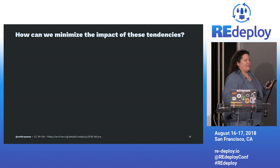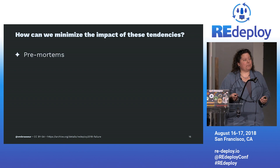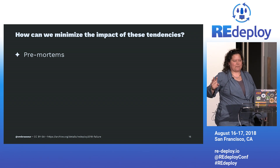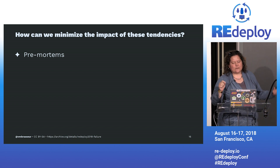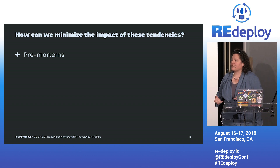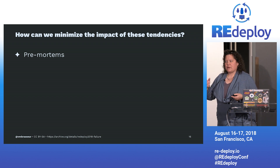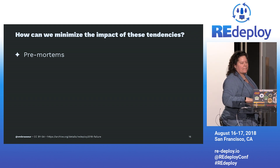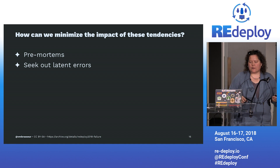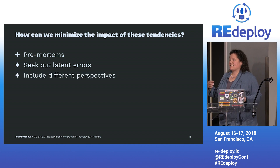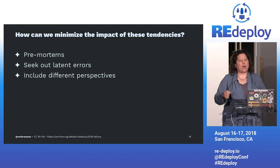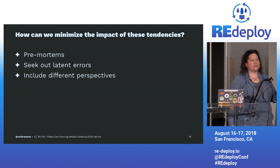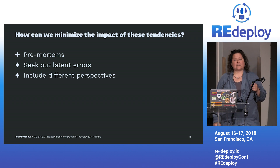How can we get better at these tendencies against complexity? We can do a premortem. When you're doing a premortem, among other things, you can look for latent errors, spot them, and do something about them before they happen — set up some sort of risk-minimizing mechanism. When you do a premortem, you can bring in different perspectives: get outsiders, people who aren't on your team, people who don't know 'the way we do things here.' Those people are going to be asking a lot of questions the team otherwise wouldn't think to ask, and they're probably going to spot a lot more latent errors than you do.